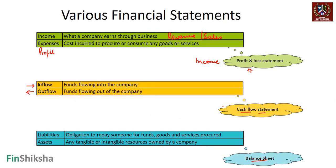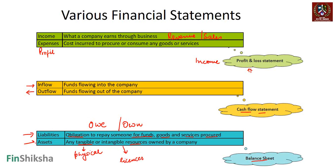The next statement is the balance sheet, which is probably one of the most important. It tells you what you owe to someone versus what you own. Liabilities are where you've raised money — obligations to repay funds, goods, or services procured. Once you get this money, you use it to buy resources. These resources can be tangible, like a building or raw material, or intangible, like licenses. These are known as assets.